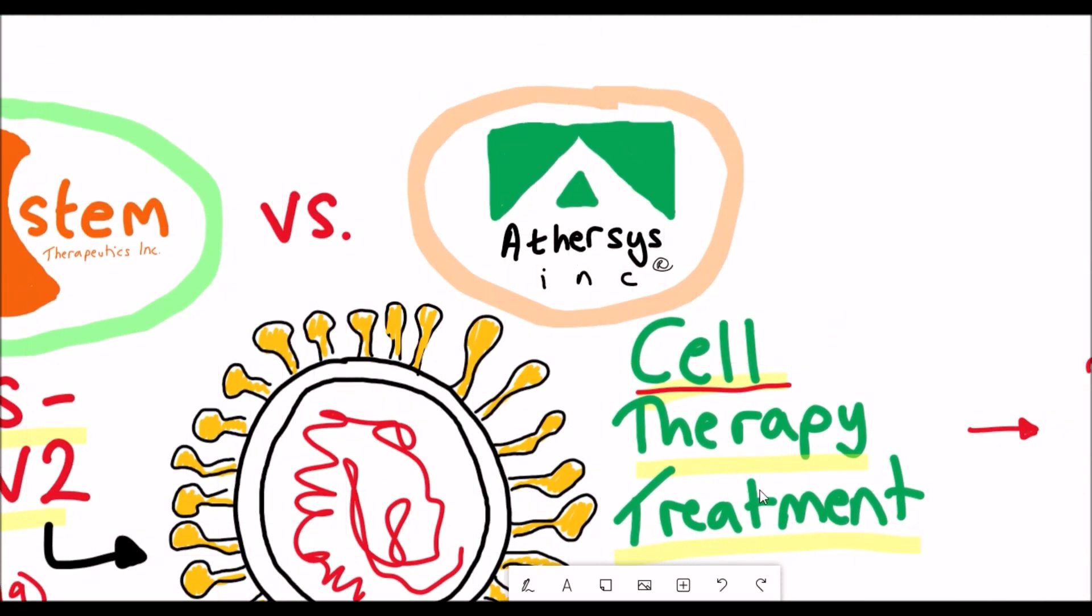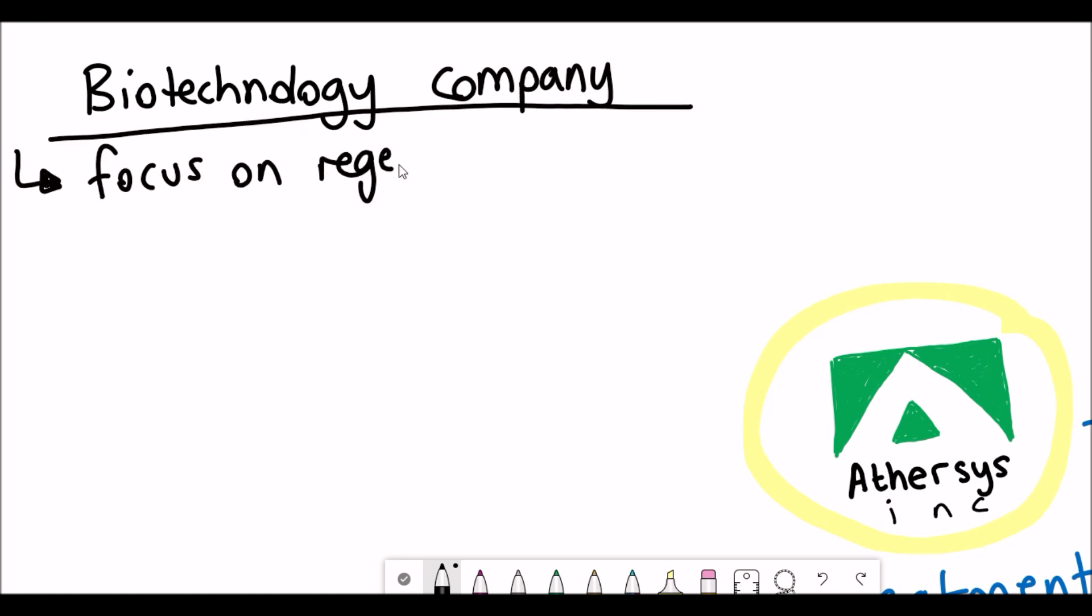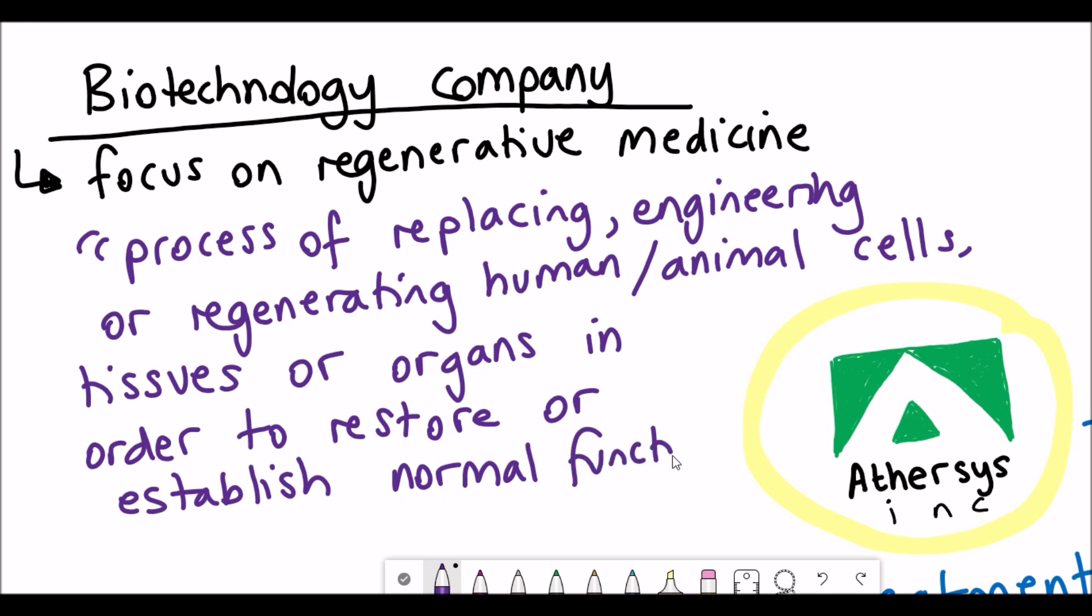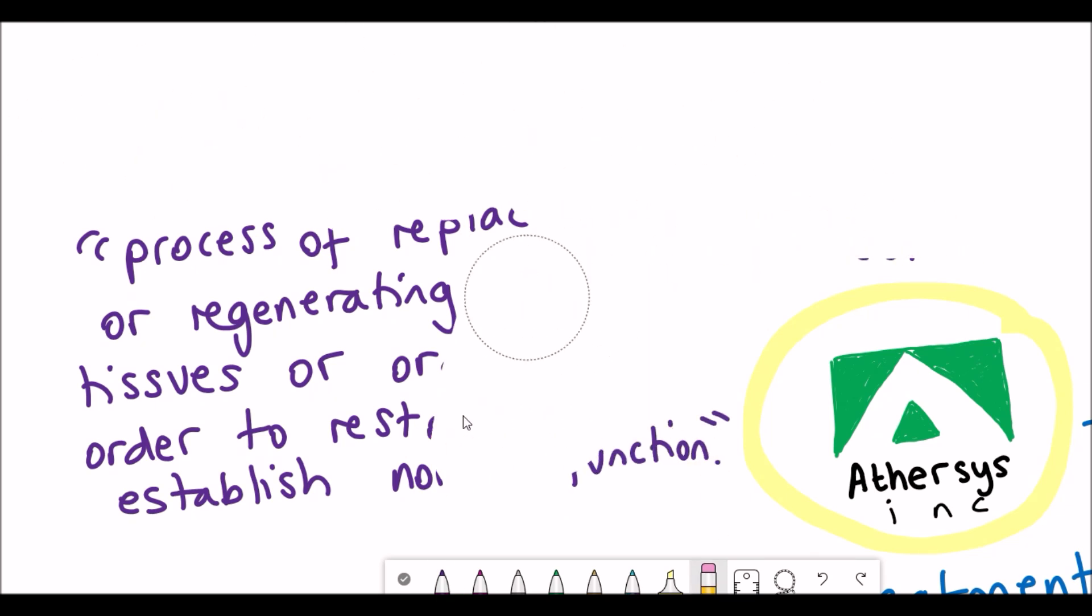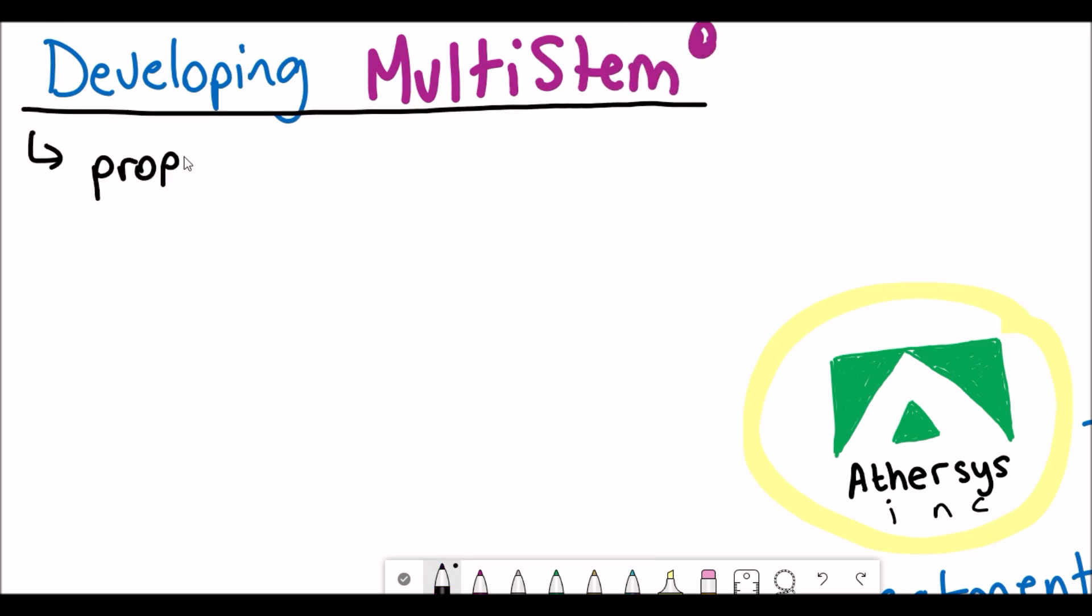Around a month ago I made a video about Athersys, so I'll reiterate a couple of points. Athersys is a biotechnology company focusing on regenerative medicine, which is the process of repairing, engineering, or regenerating human or animal tissues or organs to restore the initial function of that tissue. Before this outbreak, Athersys was using their own product called Multistem to investigate its properties in preventing ARDS symptoms. Multistem is their stem cell product.